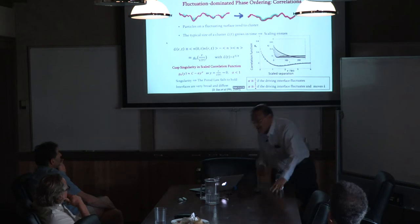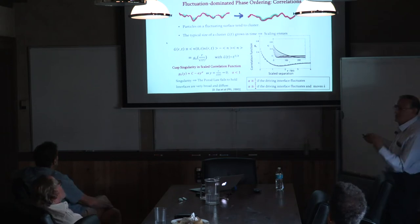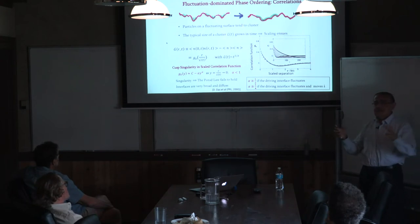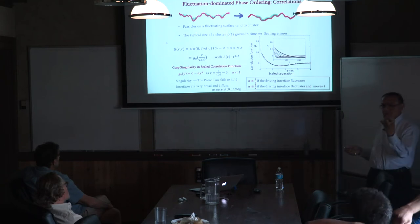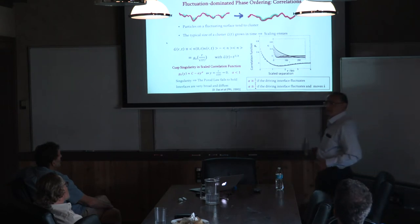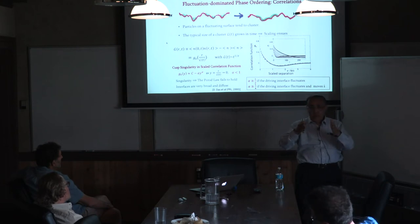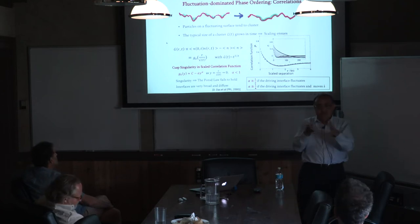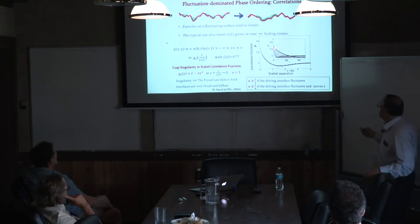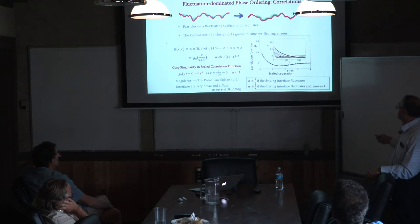So what happens? You form small collections but as time goes by the things actually get together. The typical size of a cluster, l(t), grows in time. The density-density correlation function is a function of r and also of time. As time goes on, more correlations build up, and when we scale by this growing length we get a single curve. These are the actual Monte Carlo results for correlation functions as a function of distance at short times and ever longer times — scaled by the growing length scale, everything falls onto one single curve.